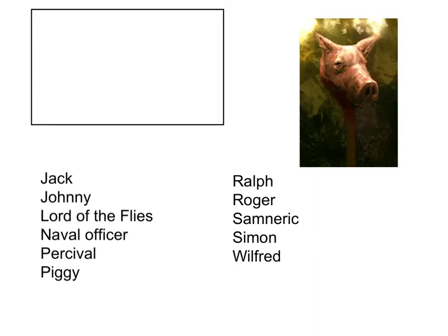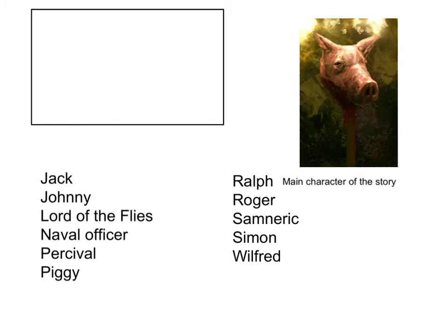Now, a couple of important characters. Ralph is the main character of our story. When you think of Ralph, you think of someone who's heroic and very good looking. He's the only boy who acknowledges that Simon was actually murdered. He's a developed, intelligent character and one of the only characters who actually grows throughout the story.